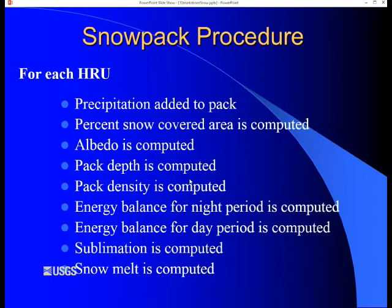So what are the computational steps for the snowpack on each HRU? Basically, the first thing that happens is any new precipitation is added to the snowpack. Then the snow covered area is computed based on the pack water equivalent, albedo is computed, the depth, and that's the actual depth. Pack density is computed, the energy for the night, the energy for the day, then sublimation, and finally any melted ice is computed.